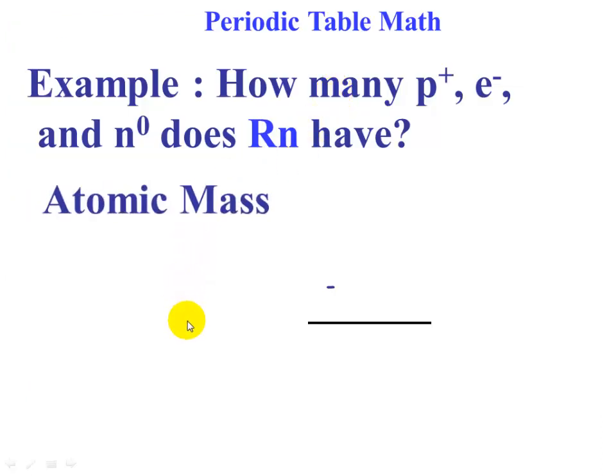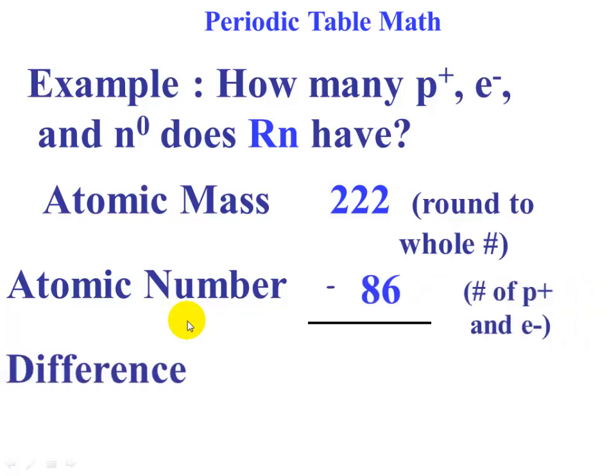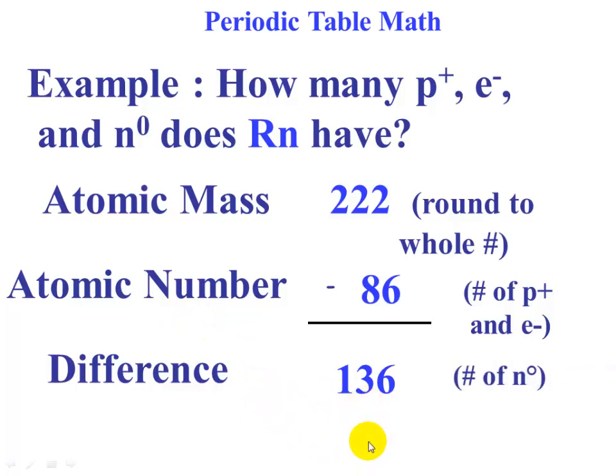What was the atomic mass, the atomic number, and the difference? The difference here is going to be 136, and that is the number of neutrons.